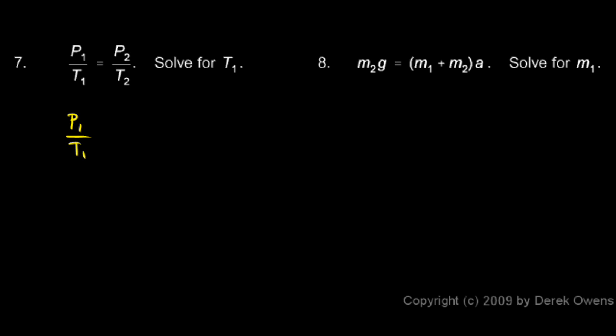So here's what we do. P1 over T1 equals P2 over T2. We can cross-multiply. We have a proportion here, one fraction equal to another. So if we cross-multiply, we get P1 times T2 equals P2 times T1.